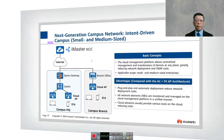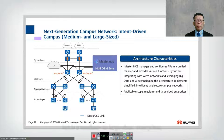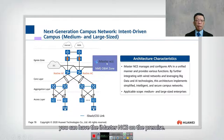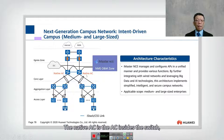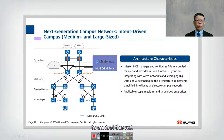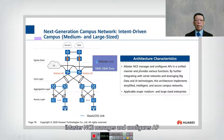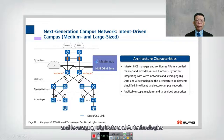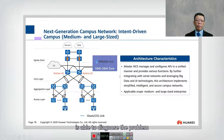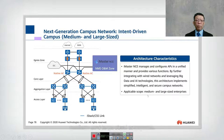For medium to large enterprises, the iMaster NCE can be deployed on-premise alongside a native AC embedded in switches such as the S12700 or S7700. The iMaster NCE manages and configures APs in a unified manner, integrating with wired networks and leveraging big data and AI technology. This architecture implements a simplified, intelligent, and secure campus network, capable of diagnosing problems before they cause major disruptions.